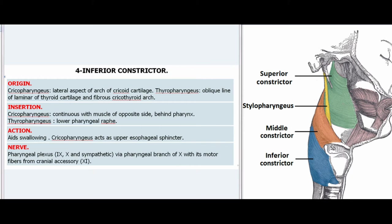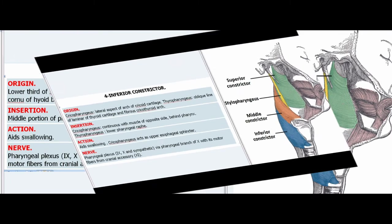4. Inferior Constrictor. Origin — Cricopharyngeus: lateral aspect of arch of cricoid cartilage; Thyropharyngeus: oblique line of lamina of thyroid cartilage and fibrous cricothyroid arch. Insertion — Cricopharyngeus: continuous with muscle of opposite side behind pharynx; Thyropharyngeus: lower pharyngeal raphe. Action: Aids swallowing; Cricopharyngeus acts as upper esophageal sphincter. Nerve: Pharyngeal plexus (IX, X and sympathetic) via pharyngeal branch of X with its motor fibers from cranial accessory nerve (XI).